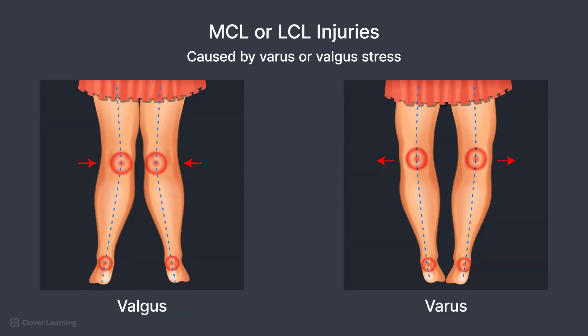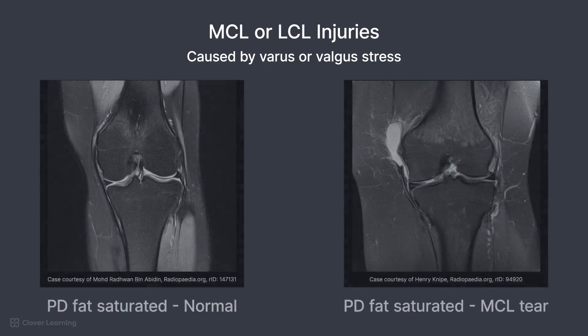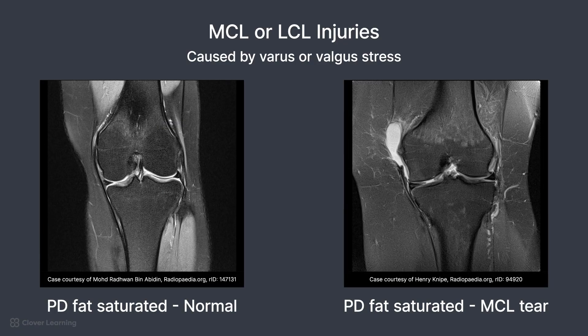Medial collateral ligament or MCL injuries often result from valgus stress, like a lateral knee impact in sports, while lateral collateral ligament or LCL injuries are caused by varus stress or direct trauma. Normal MCL and LCL appear as low-signal bands on the lateral aspect of the knee, best demonstrated on coronal images. Tears or sprains show high-signal edema or discontinuity on T2- or proton-density-weighted images. On the first image, you can see the dark MCL intact with no edema. On the second image, you can see a MCL tear with high-signal edema.